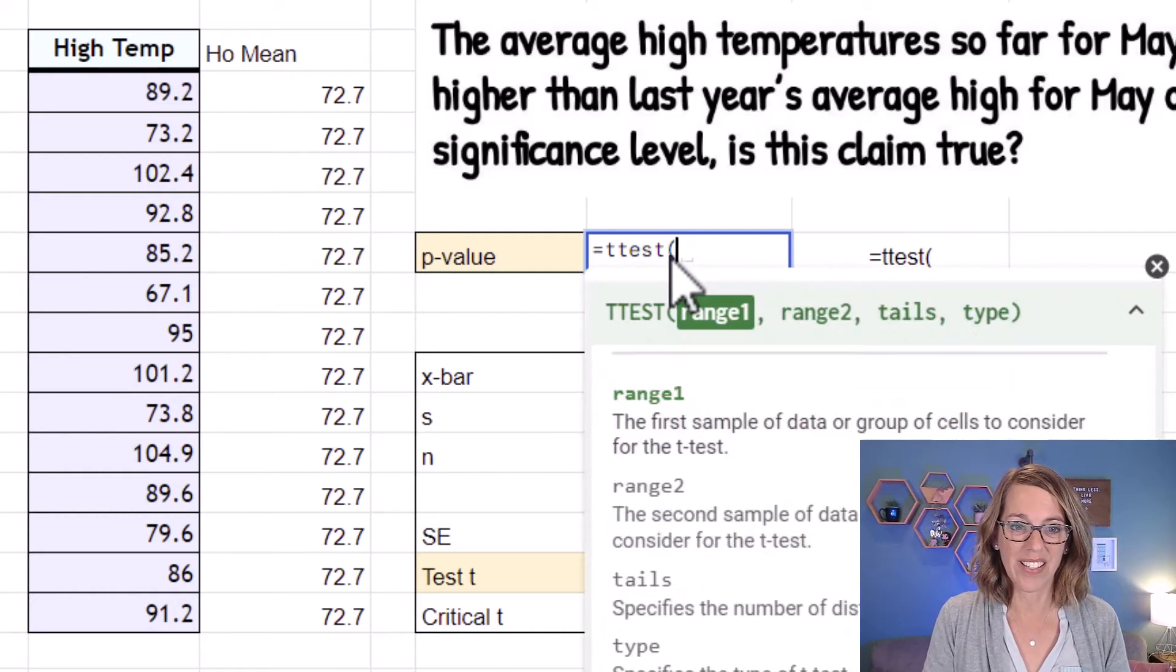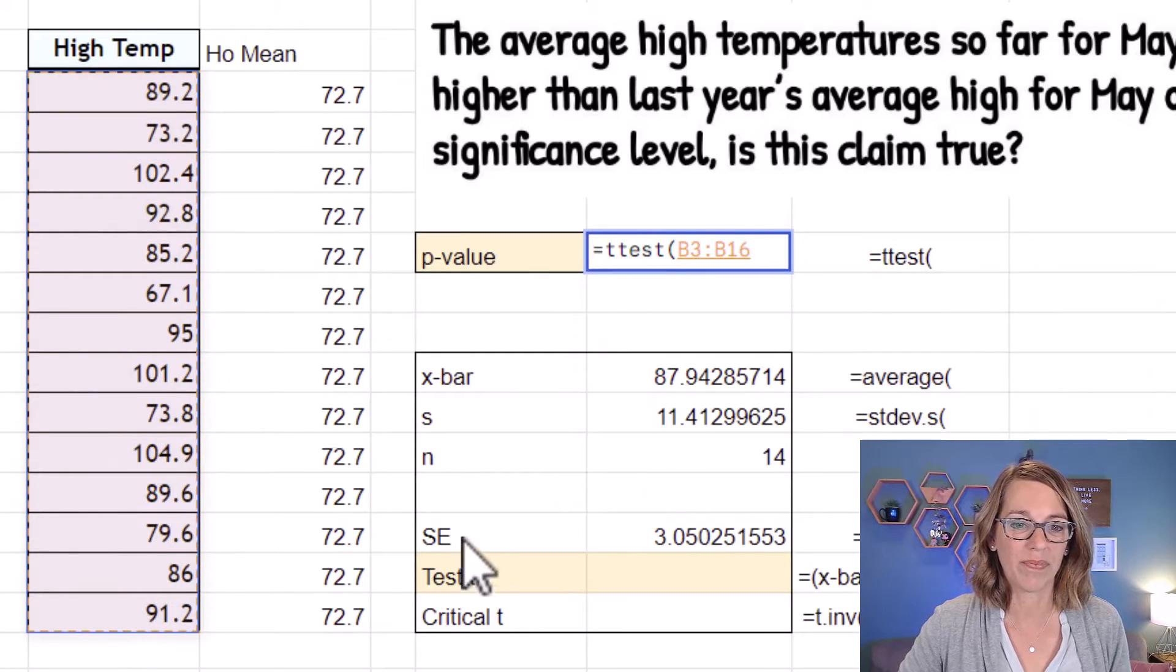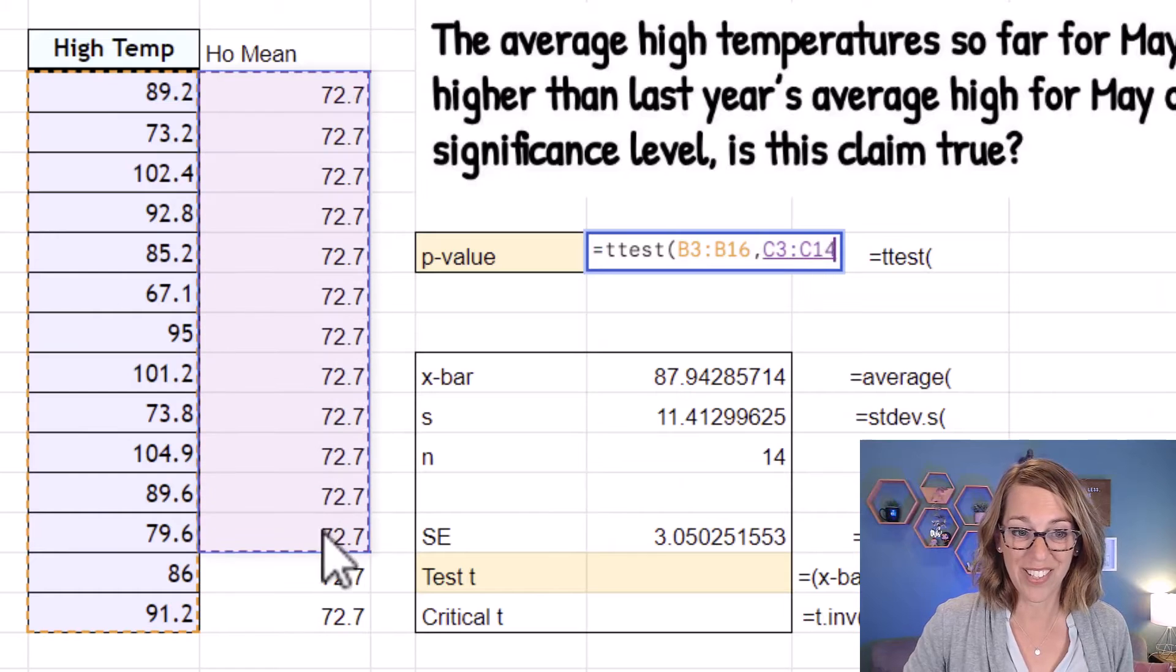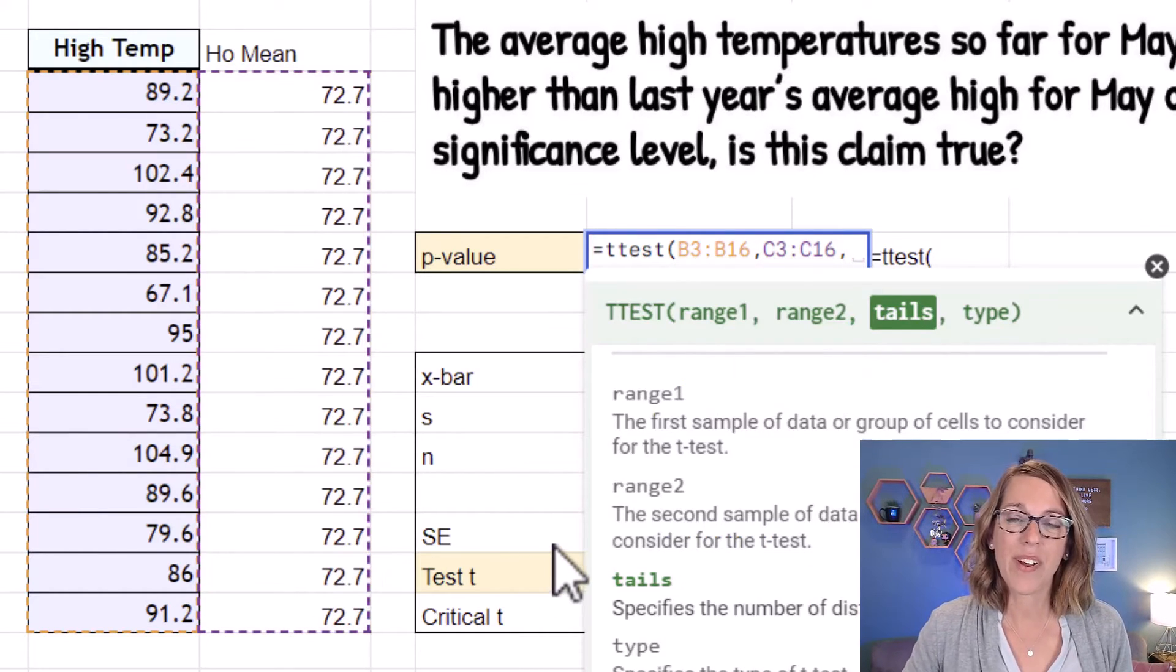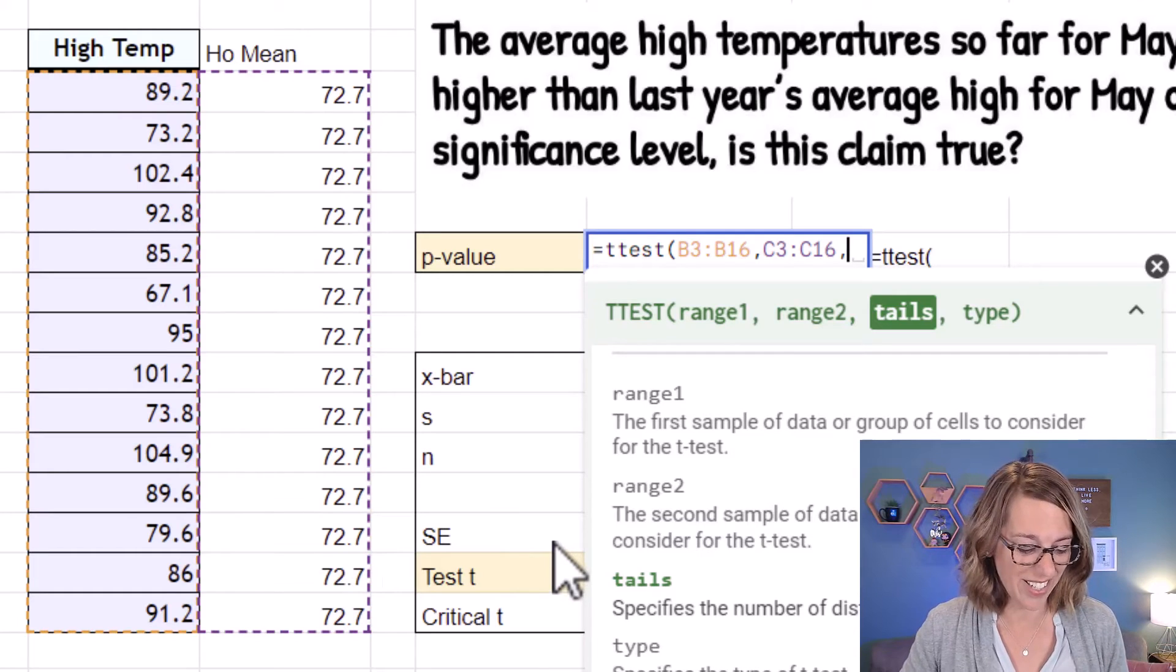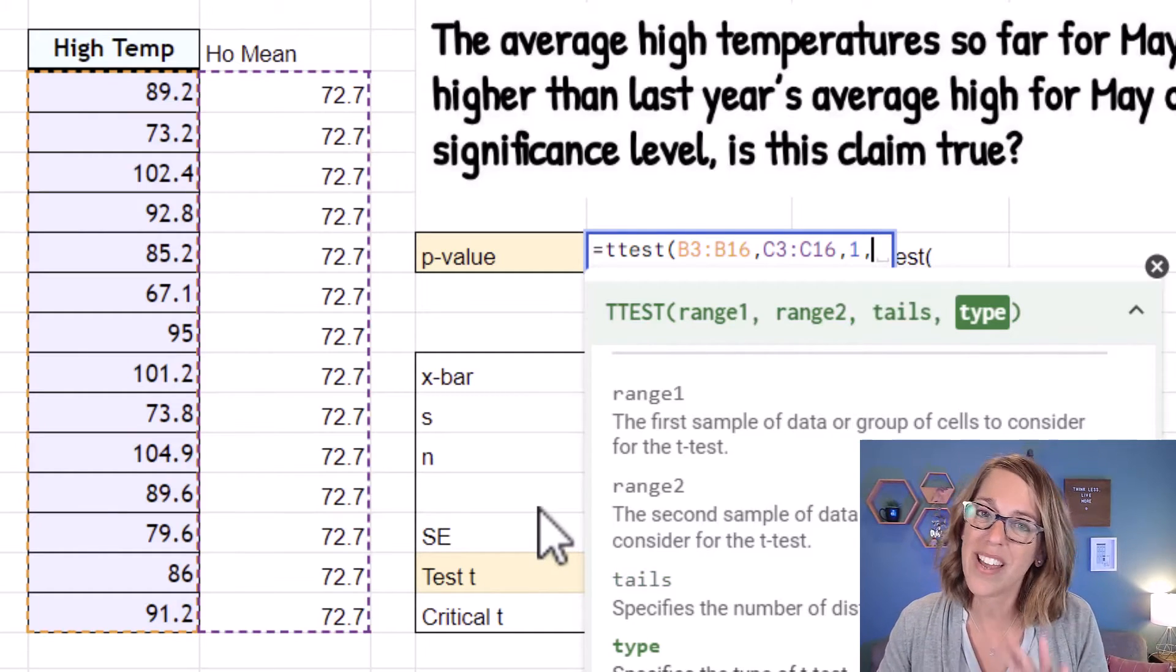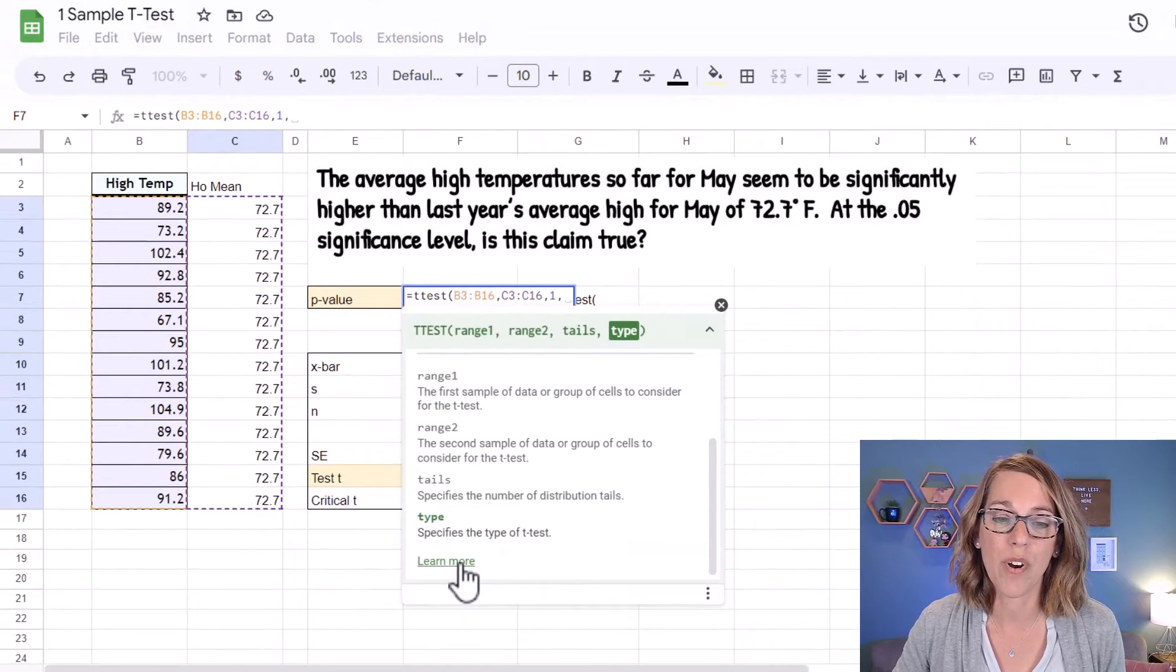Equals t-test. Range one are my high temperatures, comma. Range two are my hypothesized mean, comma. The number of tails. This is a one tail test on the right, so I'm going to go ahead and hit one, comma, and then it wants to know the type.